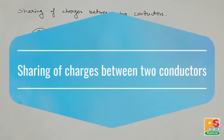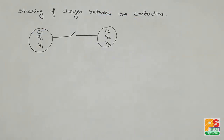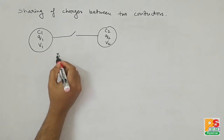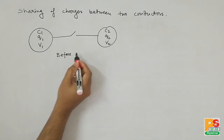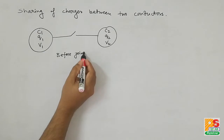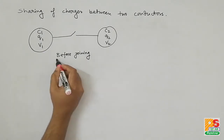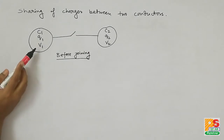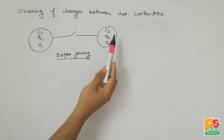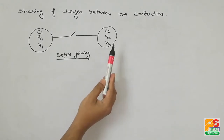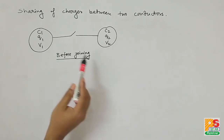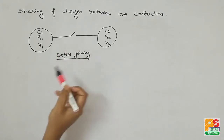Hello students, today I will discuss sharing of charges between two conductors. Suppose we have two conductors — you can see in the picture. This is the situation before joining them. The capacity of the first conductor is C1, charge Q1, potential V1, and the capacity, charge, and potential of the second conductor are C2, Q2, and V2 respectively.